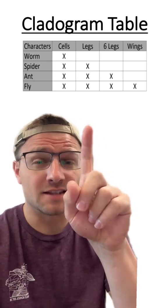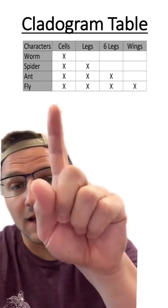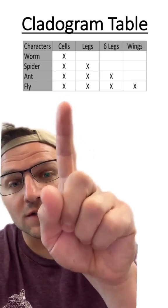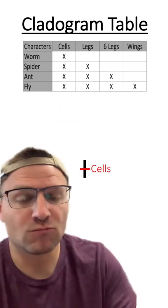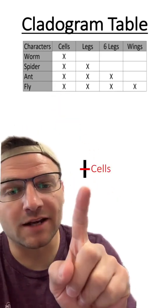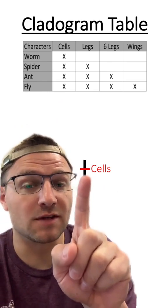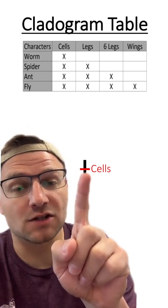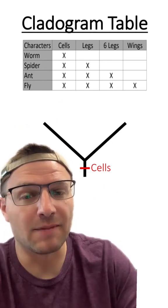You make a cladogram using this table. Each of the X's on the table represents that species possessing a particular trait. I like to start off with a trait that all of the species have. In this case, all of the species have cells. So I'm going to start my line right here — my lineage — and this is going to be the first adaptation of cells.